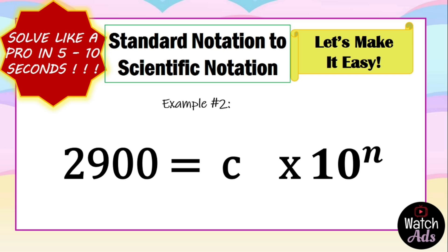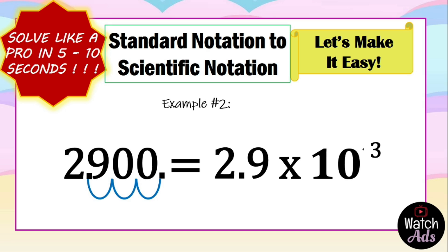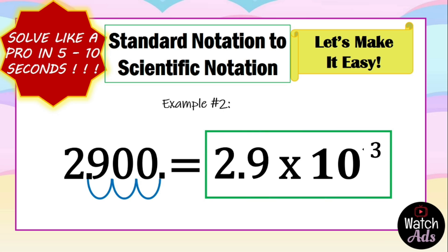Let's have another example: two thousand nine hundred in scientific notation. First, two thousand nine hundred is greater than one, so our exponent is positive. Next, we find the original location of the decimal point — that is at the end of the number. The first non-zero digit is two, the second non-zero digit is nine, so we write the second decimal point to the right of two. We count the digits in between the two decimal points: one, two, three — our exponent is positive three. We drop all the zeros and retain the non-zero digits: 2.9 — that is our numerical coefficient. Final answer: 2.9 multiplied by 10 raised to 3.